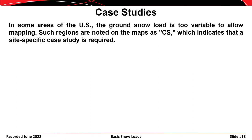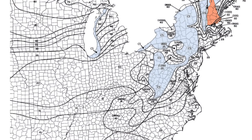Some areas of the map are labeled 'case study' or 'CS,' indicating that a site-specific study is required to determine snow loads. Looking at the Northeast and Midwest, several such locations exist. Most of these are in mountainous regions or regions near bodies of water. The speaker grew up in northwestern Pennsylvania, in Warren, PA.